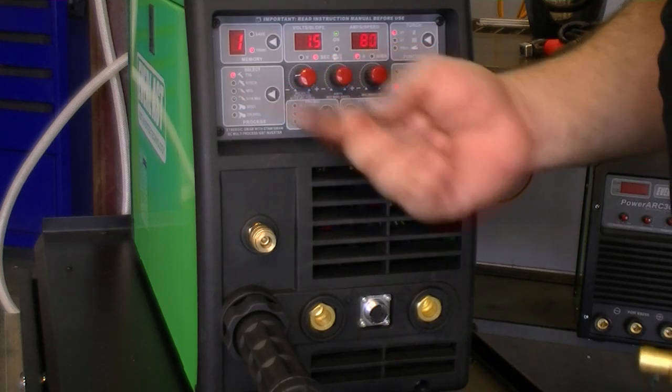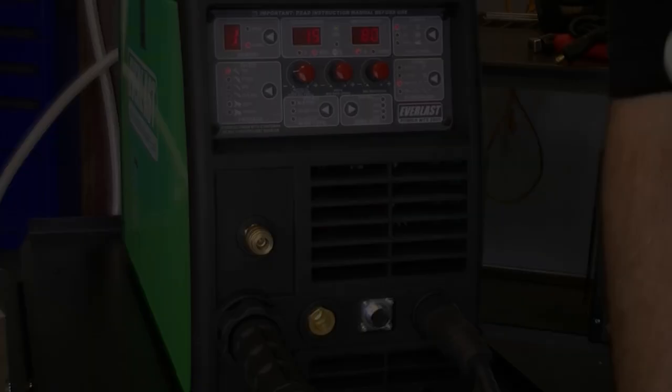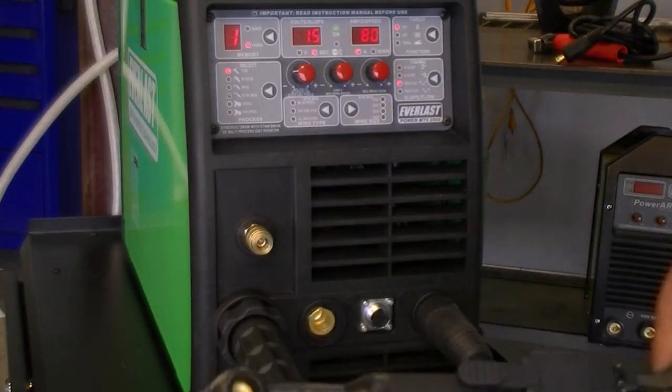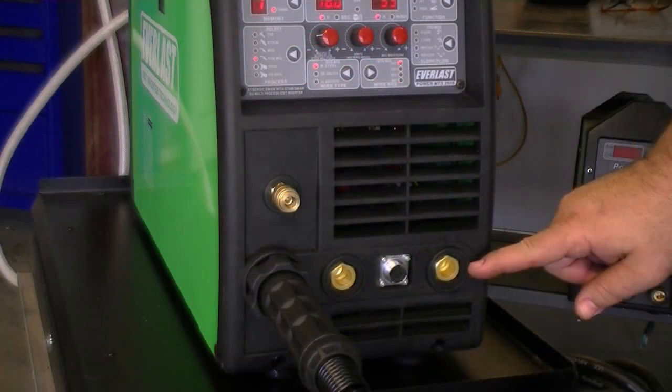To weld in TIG mode the work clamp should be installed into the positive connector. Next take the TIG torch and install it into the negative connector. With TIG the torch will always be installed as electro negative.